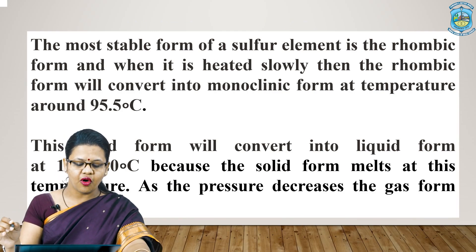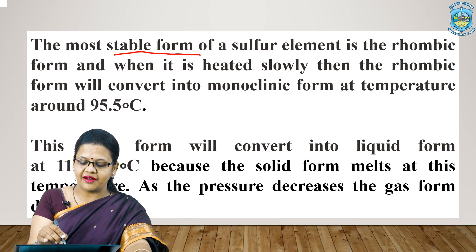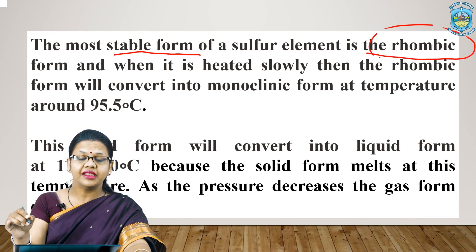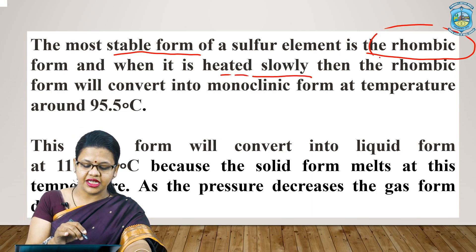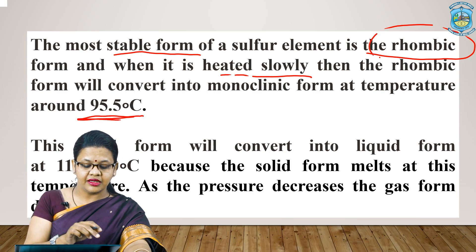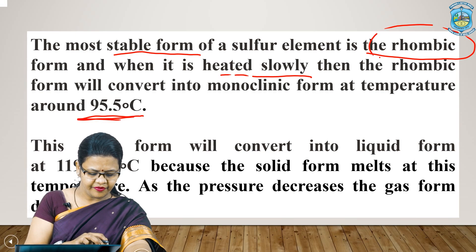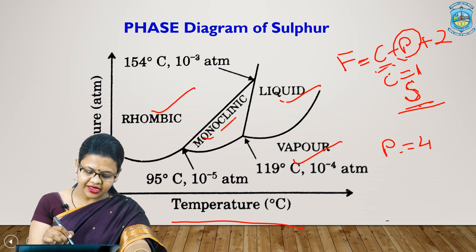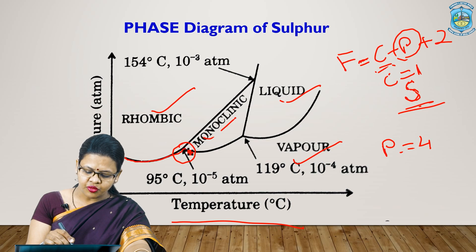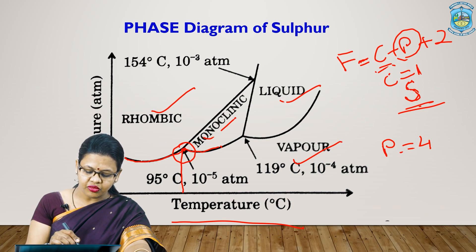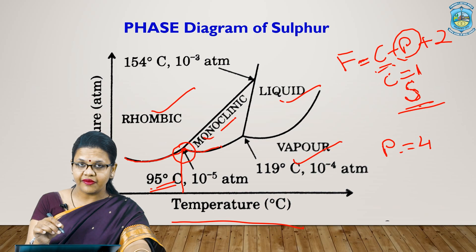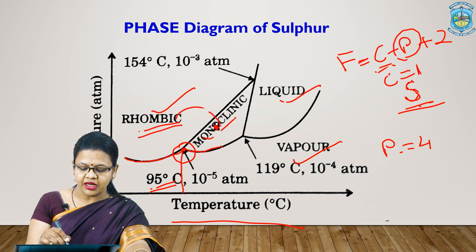The most stable form of sulphur is the rhombic form, and when this rhombic form is slowly heated it gets converted into the monoclinic form. The temperature at which this conversion occurs is 95.5 degrees Celsius. We can see this in the diagram as well — the arrow represents the temperature at which the transition of rhombic into monoclinic occurs. As we gradually heat it, as soon as this temperature is reached, we immediately see the conversion of one state into the other.